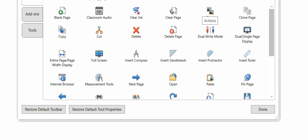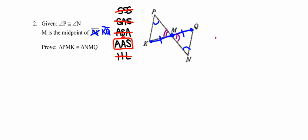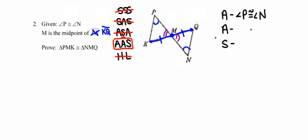For our plan: the first pair of congruent angles are angles P and N. The second pair are the vertical angles — I'll call those angle 1 and angle 2. The pair of sides are KM and MQ. Those are the three pairs of congruent parts I need to write about in my proof before I can establish that those triangles are congruent to one another.